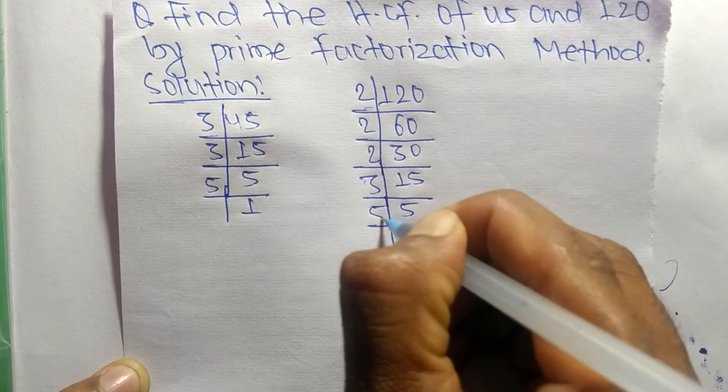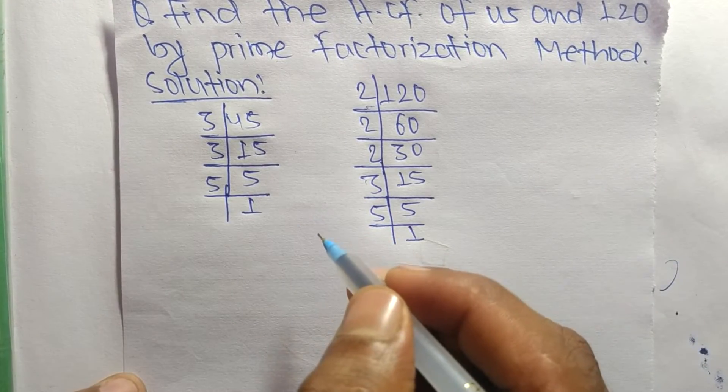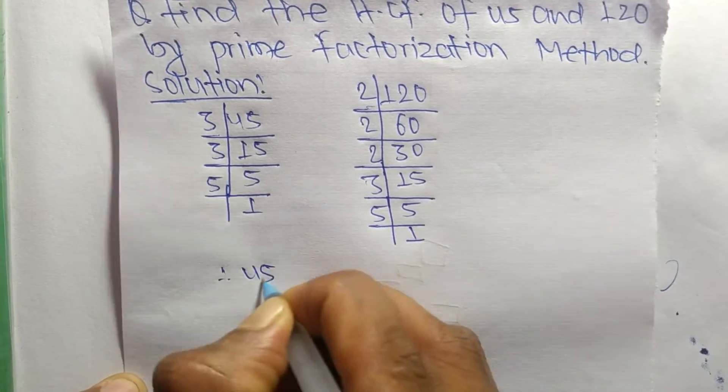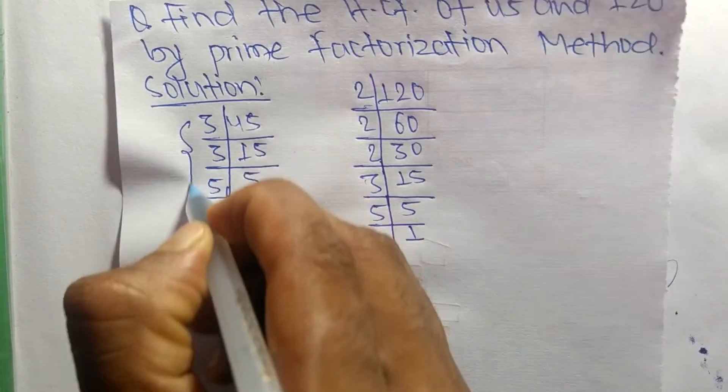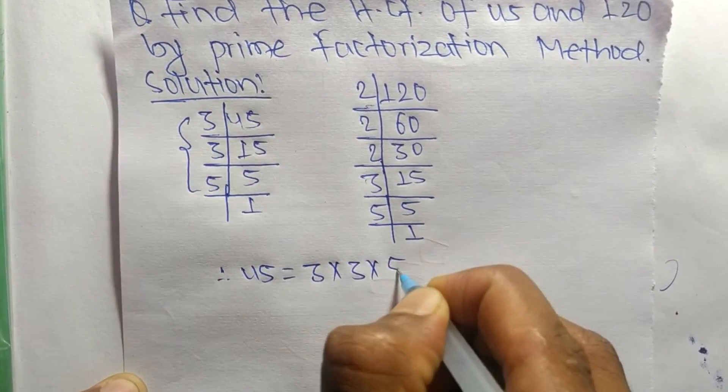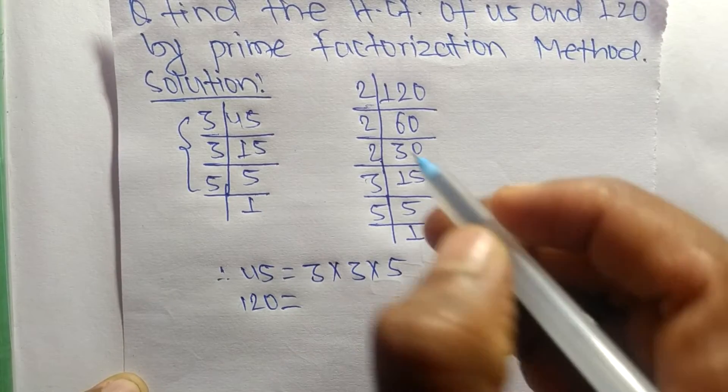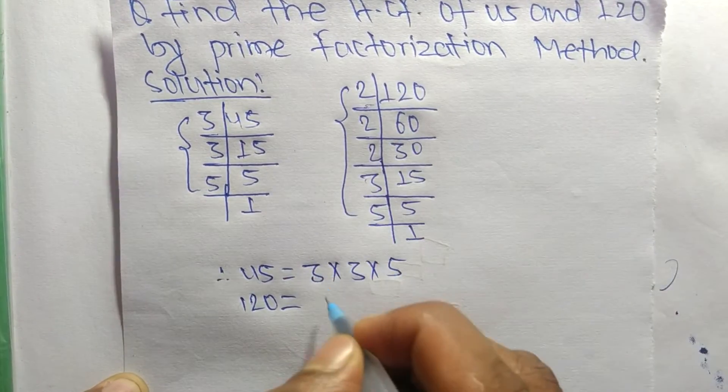So now from these prime factors, we can write 45 is equal to 3 times 3 times 5. Likewise, 120 is equal to 2 times 2 times 2 times 3 times 5.